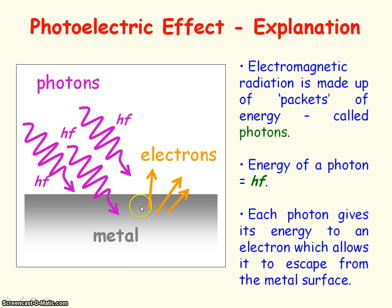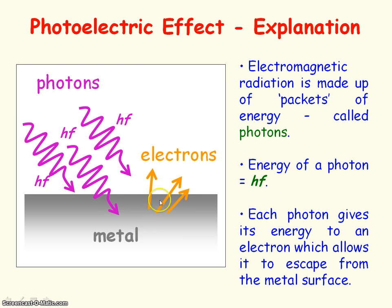Each photon gives its energy completely to an electron, which allows the electron to escape from the metal surface. In this diagram, we have three photons incident on the metal surface and three electrons being emitted. So it's a one-to-one interaction — one photon emitting one electron.